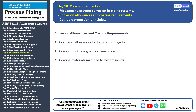Welcome back to our 30-day beginner course on ASME B31.3. Today we're diving into an important topic: corrosion allowances and coating requirements. Corrosion allowances play a crucial role in ensuring the long-term integrity of piping systems. Corrosion allowances are intentional extra thicknesses of material applied to the pipe to account for potential corrosion over time. These allowances provide a buffer, ensuring that the pipe remains structurally sound even in corrosive environments.